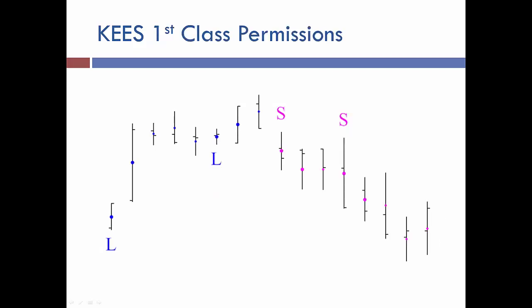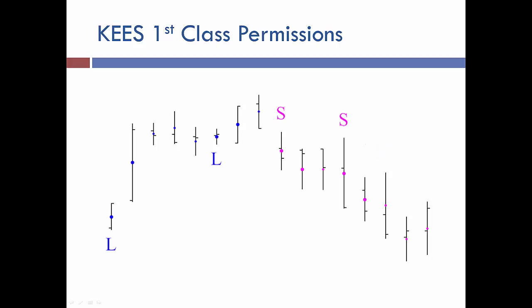In step one, the KEYS indicator decides whether or not a bar should be permissioned long or short. If it's permissioned long, it gets a shade of blue on the bar. If it is permissioned short, it will get a shade of red or pink. KEYS classifies its bars and signals into first and second class. First class bars and signals are permissioned in a certain direction on both the momentum indicators and the longer bar length. When everything is permissioned long in steps one and two, you will get a dark blue dot and possibly a dark blue L, indicating a first class long signal.